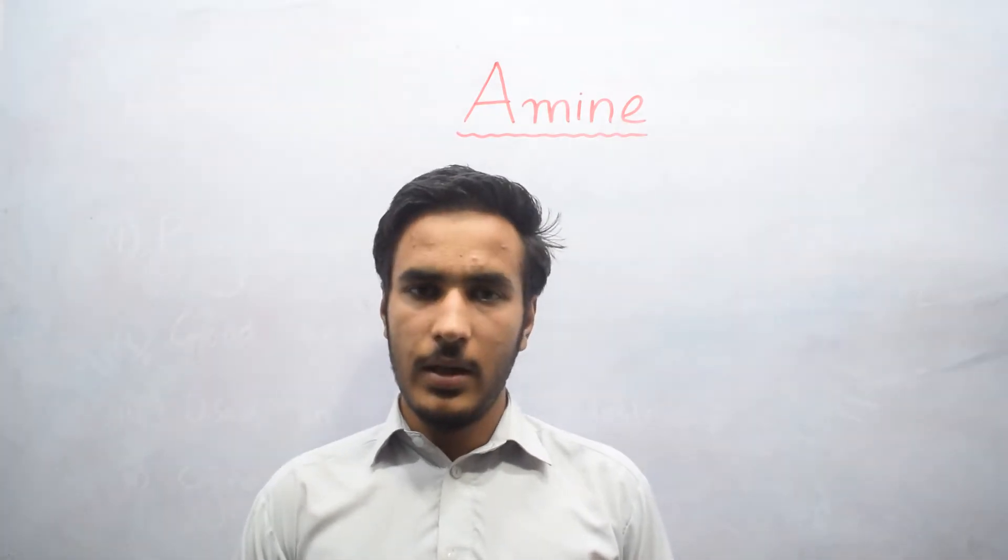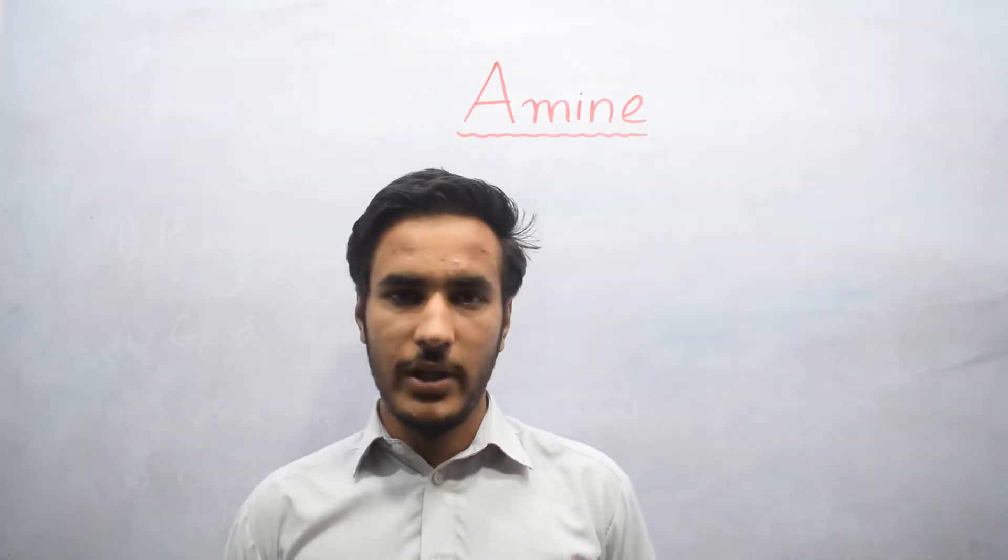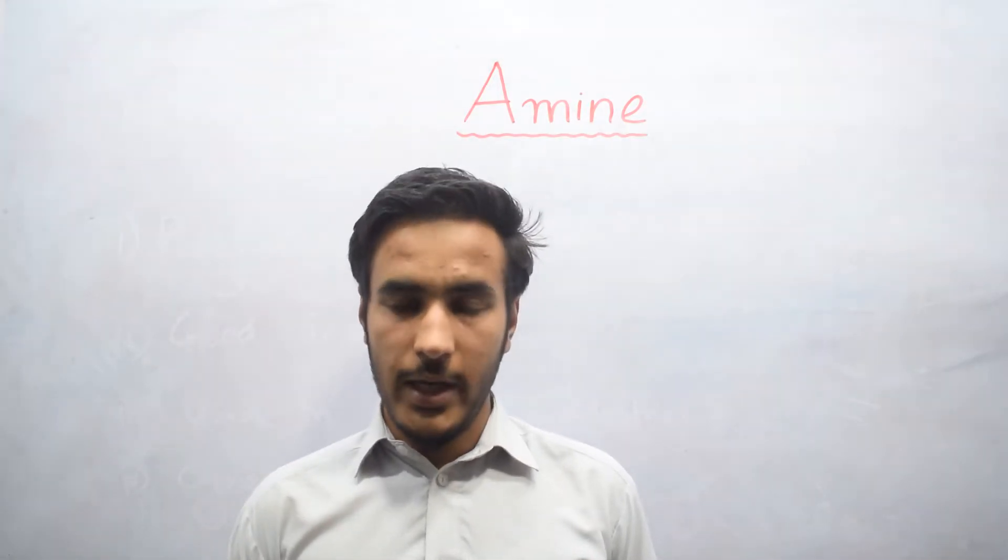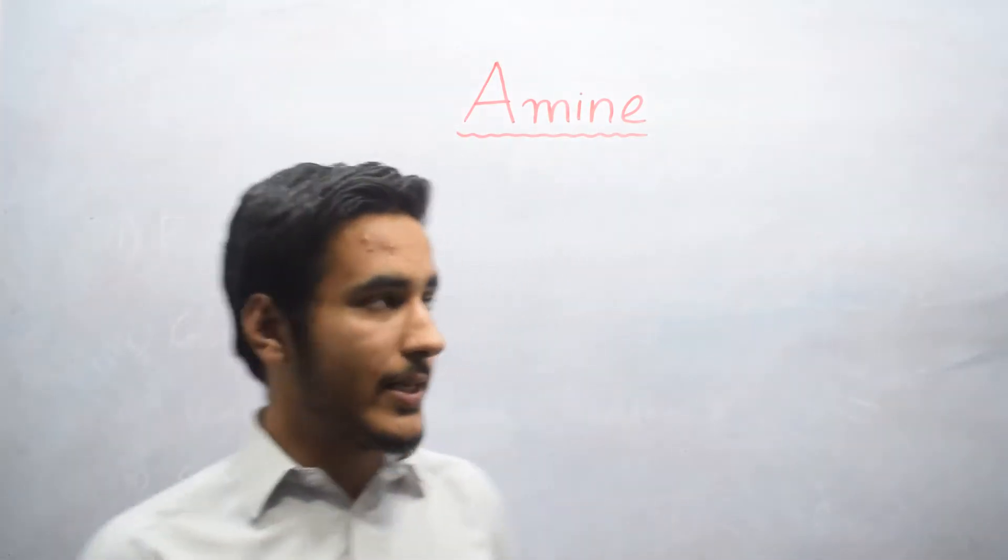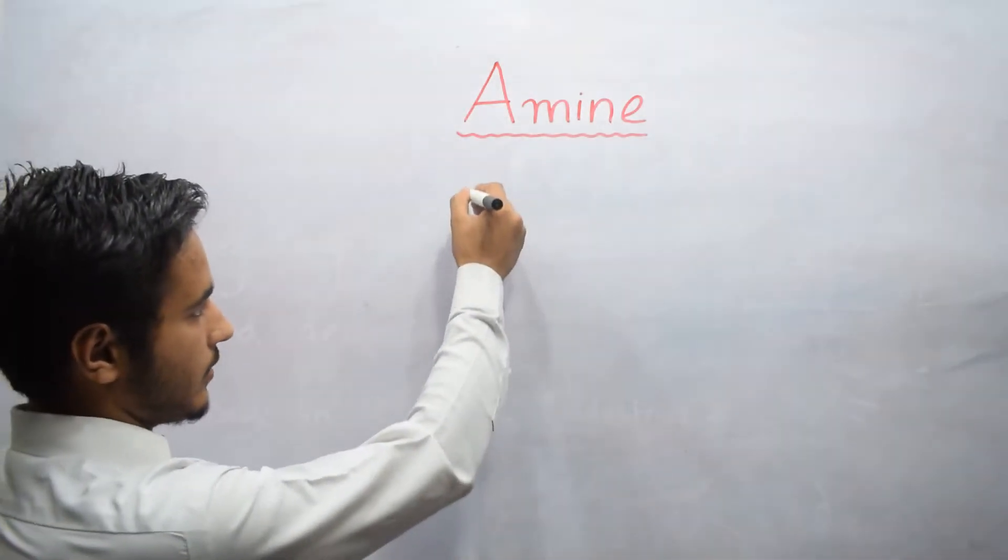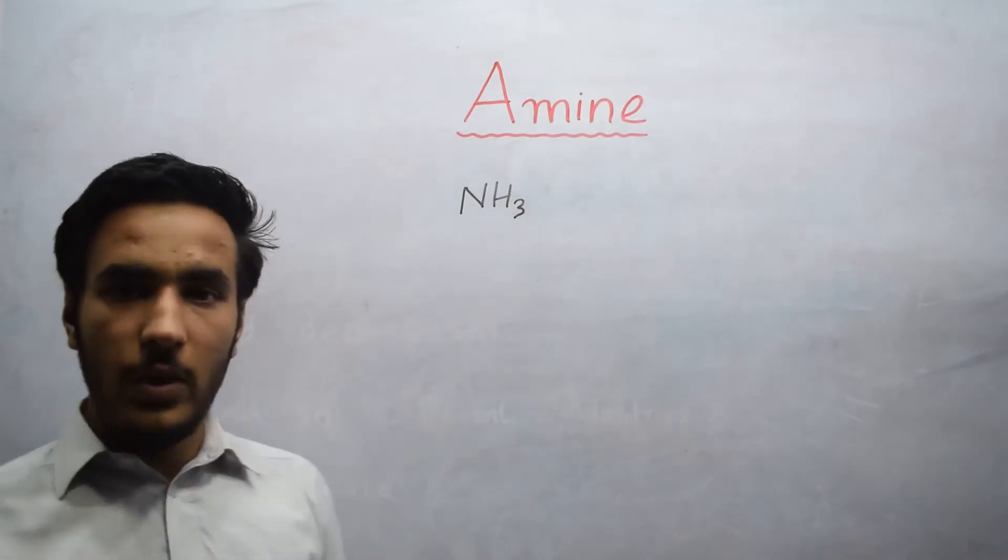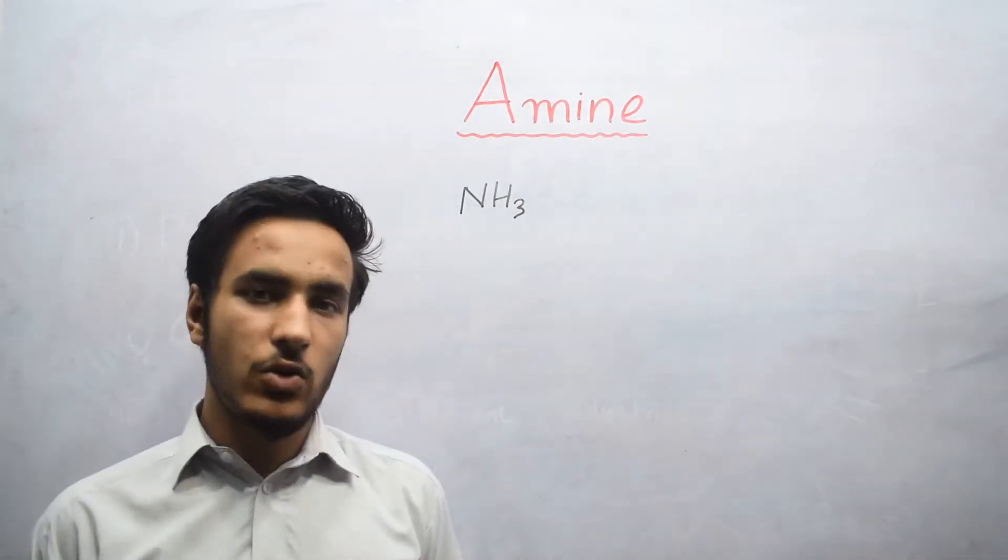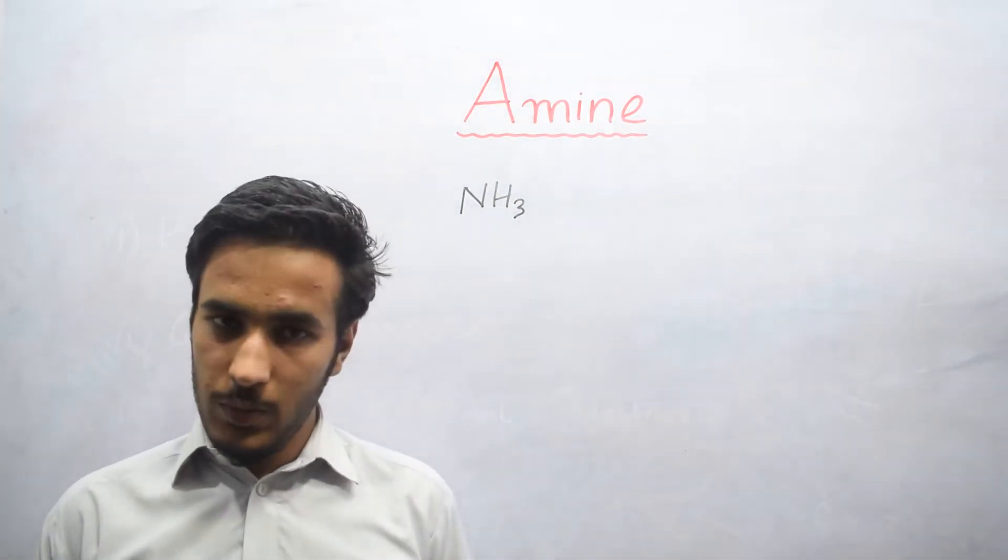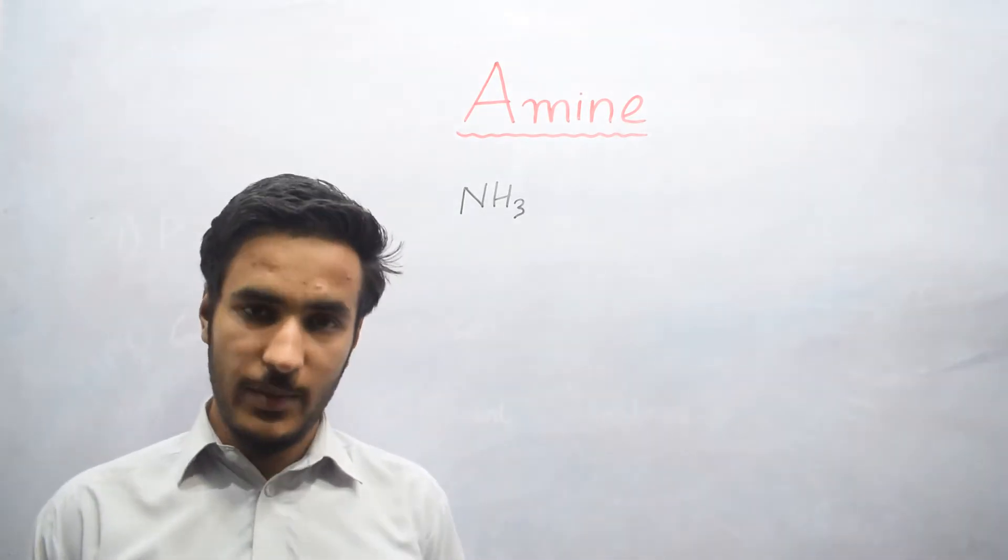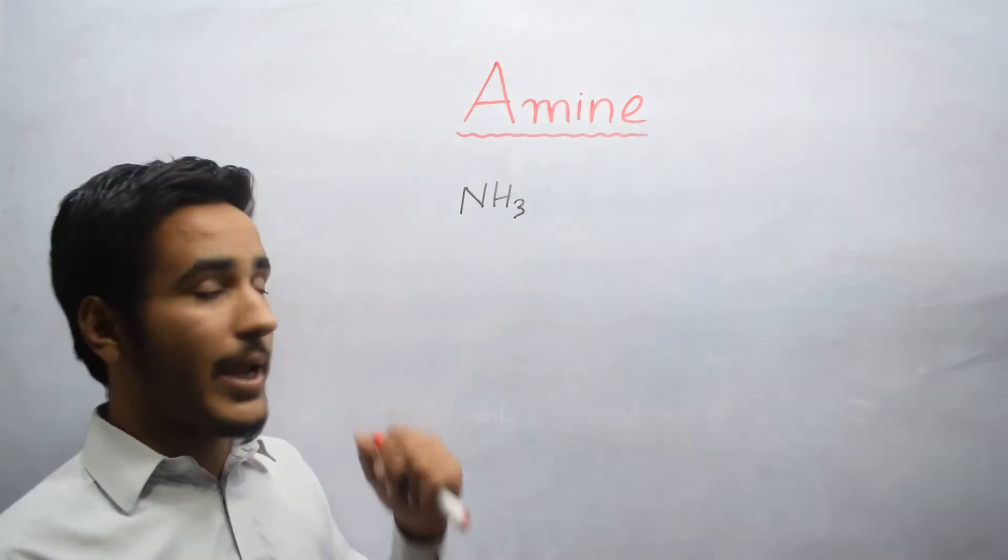What is Amine? As we know that in Ammonia there is one Nitrogen and three Hydrogen. The general formula of Ammonia is NH3. Now if one or more Hydrogen is replaced by Alkyl group, the next compound which is formed is known as Amine.